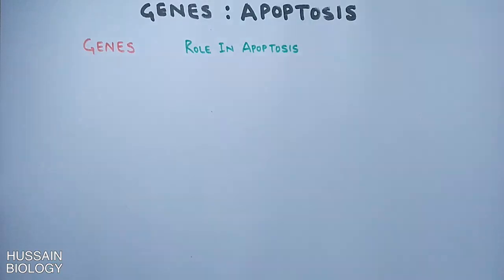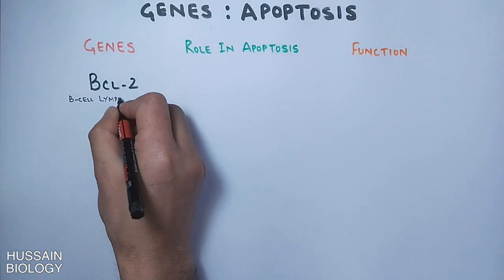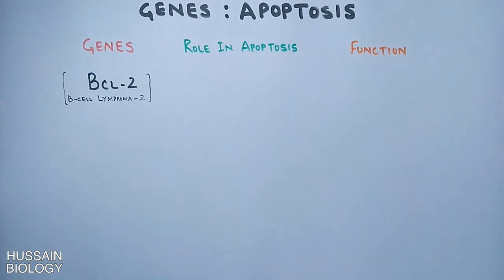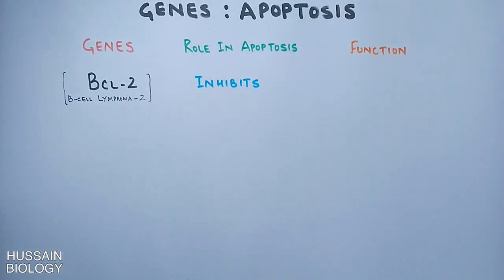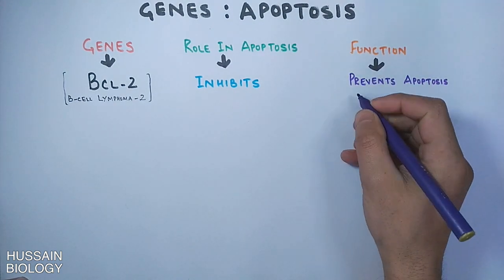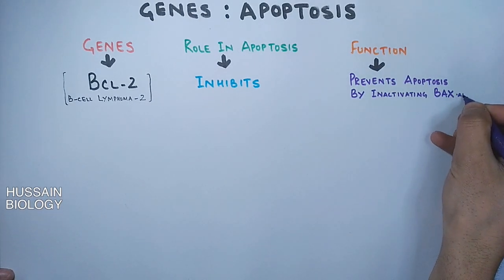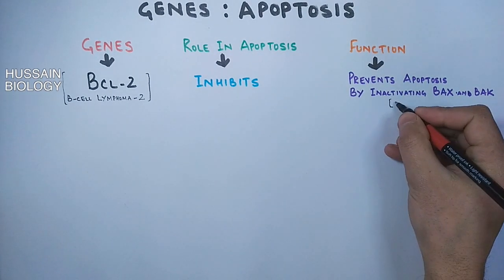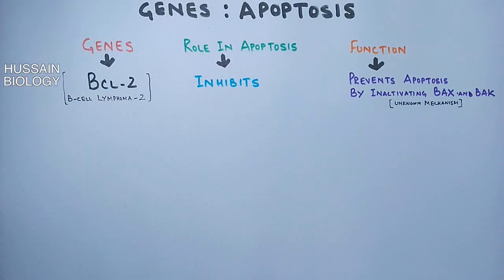The first important gene and its protein is BCL-2 — BCL lymphoma 2. It inhibits apoptosis, making it an anti-apoptotic gene. Its function is to prevent apoptosis by inactivating two types of proteins: BAX and BAD proteins, which are pro-apoptotic proteins that help in releasing cytochrome c from the mitochondria.